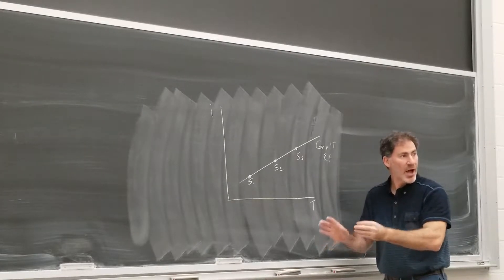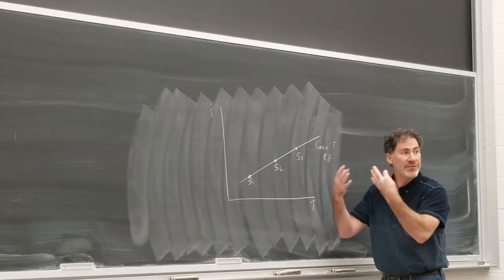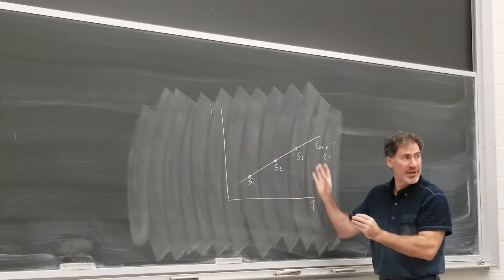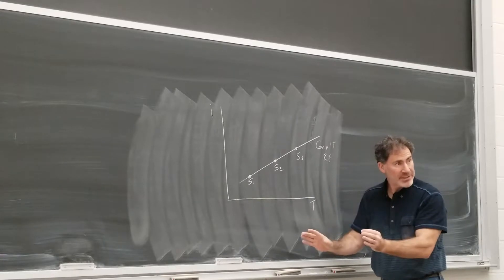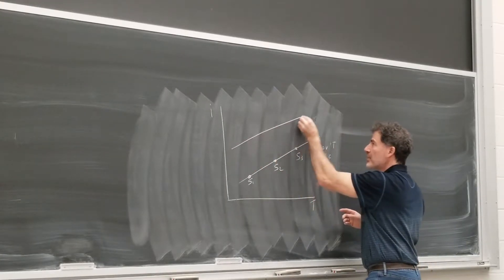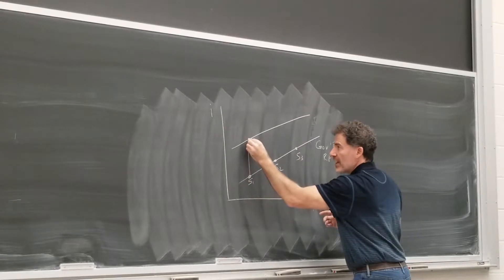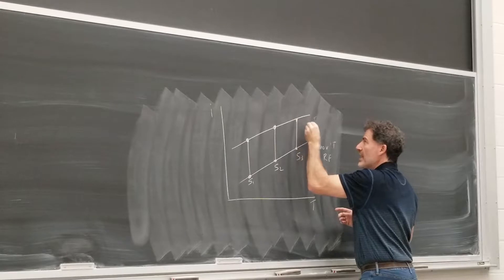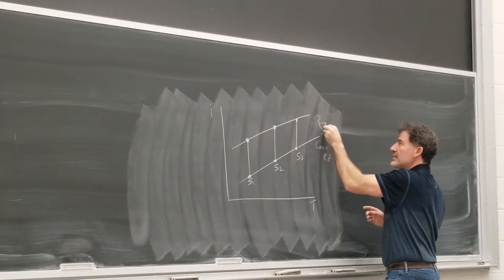Now, when we're valuing corporate bonds, which have default risk, we need to add on a spread to each of these spot rates to compensate us for that risk. That was the Z spread. We talked about that. So let me just put another line up here and we'll say this distance here represents the Z spread.